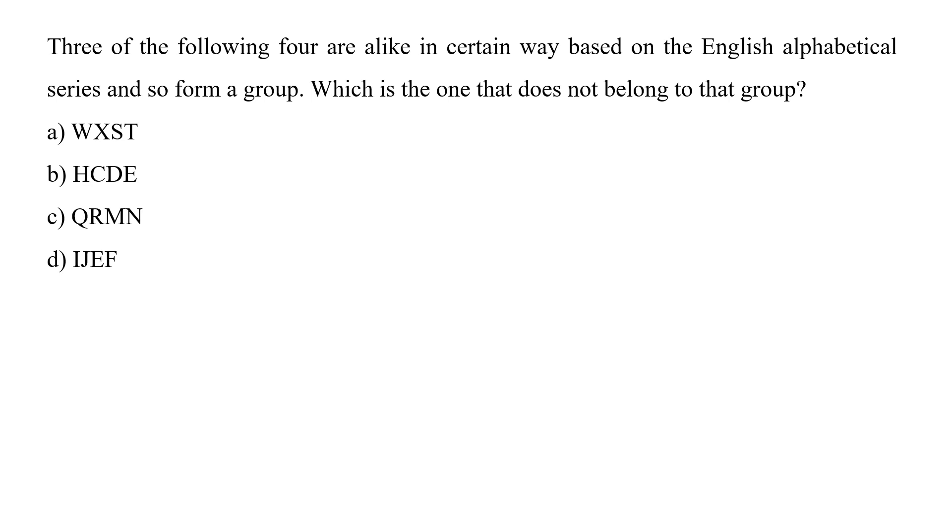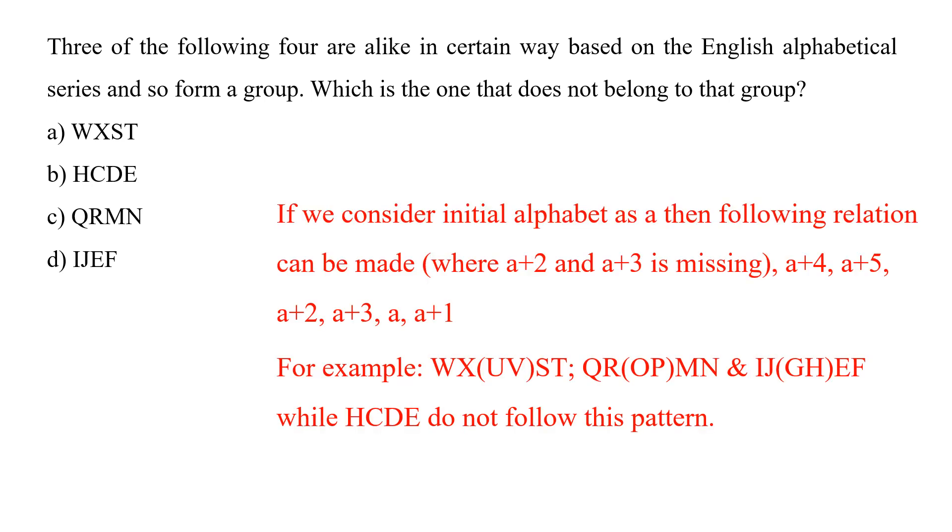3 of the following 4 are alike in certain way based on the English alphabetical series and so form a group. Which is the one that does not belong to that group? WX ST, XC D, QR MN, or IJ EN. To solve these kind of questions, we have to find out what pattern they are following. Like in the case of A, it is S, T, U, V is missing, W, X. In the option C, M, N, O, P is missing, Q, R. In the option D, E, F, G, H is missing, I, J. All three option A, option C, and option D, they are following the pattern which is missing in the case of option B. So option B is the correct answer.